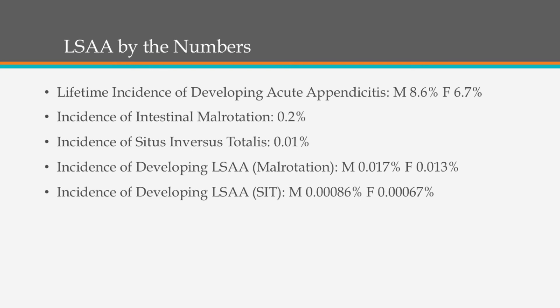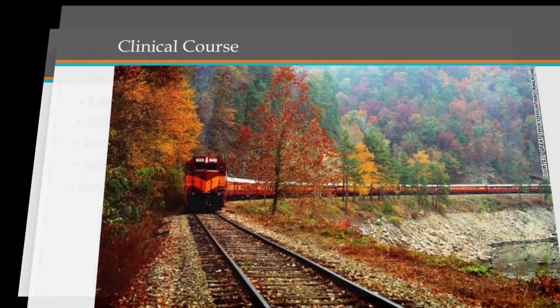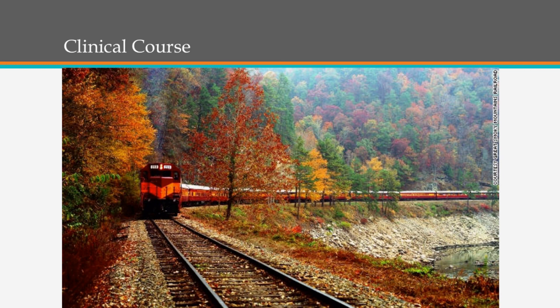Let's talk about left-sided appendicitis by the numbers. Here's the incidence of all these things — basically there's about a 1-in-10,000 chance of someone getting left-sided appendicitis, based on the combined probability of getting appendicitis and having either situs inversus or malrotation.